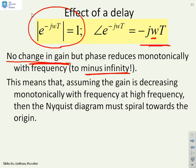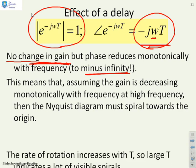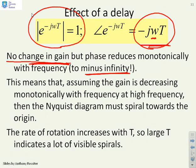Assuming gain is decreasing monotonically with frequency, then at high frequency, you're going to find a Nyquist diagram that spirals towards the origin. The reason it spirals is because this phase is going to infinity. Every time ωT goes through 2π, you've gone round one full revolution. The rate of rotation clearly increases with T because the actual phase lag is ωT. If T is bigger, the phase lag is bigger.